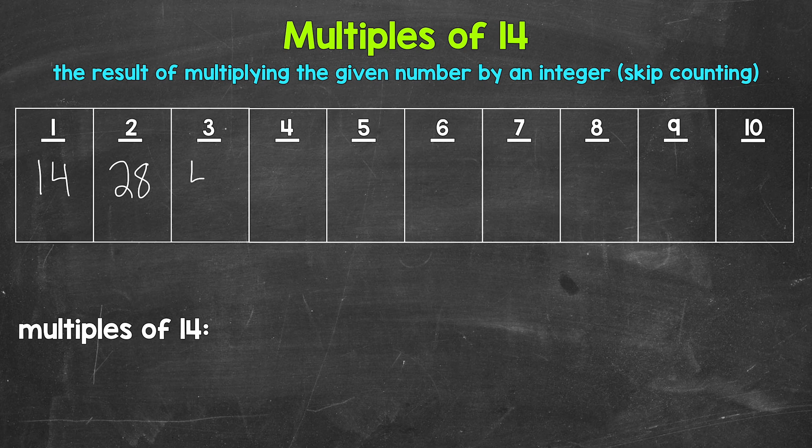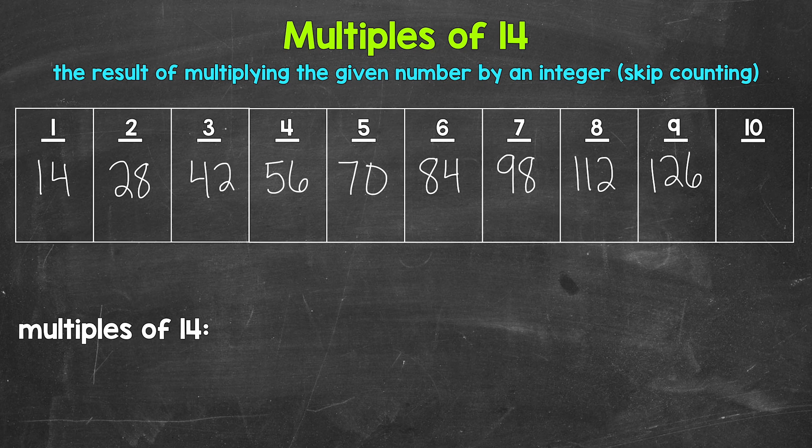Three times 14 is 42. Four times 14 is 56. Five times 14 is 70. Six times 14 is 84. Seven times 14 is 98. Eight times 14 is 112. Nine times 14 is 126, and 10 times 14 is 140.